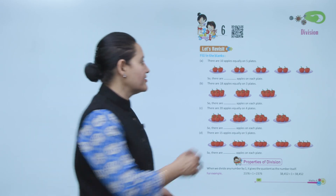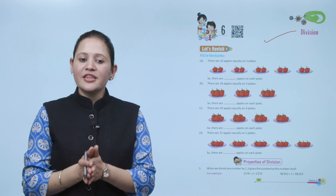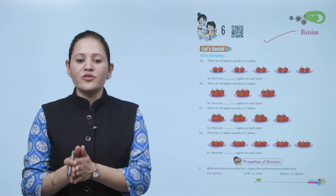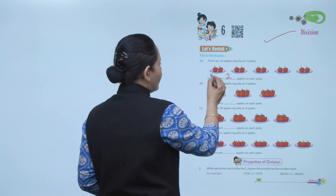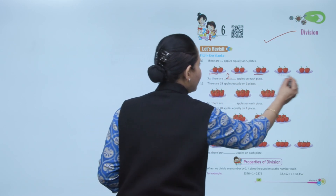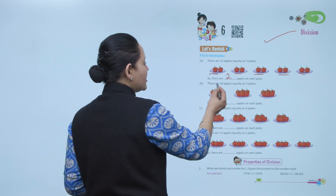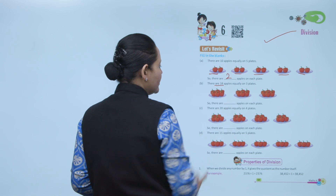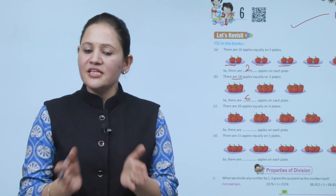Hello kids, welcome to today's maths class. Today we'll do division. Let's revisit fill in the blanks: there are 10 apples equally on 5 plates, which means there are 2 apples on each plate. Total 18 apples equally on 3 plates gives 6 apples each — that means 18 divided by 3 equals 6.